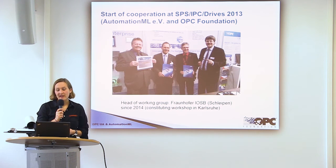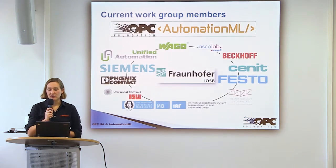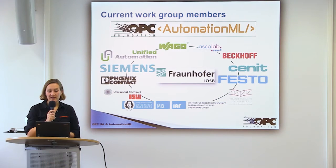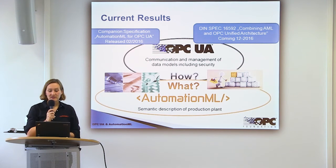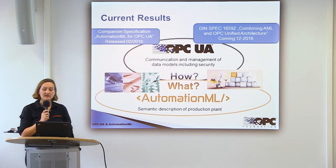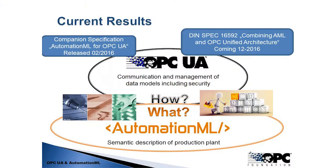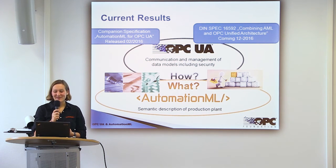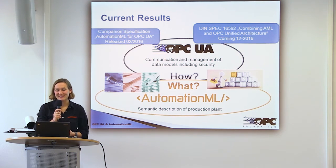Since then, I have been the head of this working group and we have many active group members involved in the design and specification phase for combining both standards. Current results are, on the one hand, the companion specification released in February 2016, and on the other hand, the upcoming DIN SPEC 16592 combining AutomationML and OPC UA, which is coming out in December 2016.